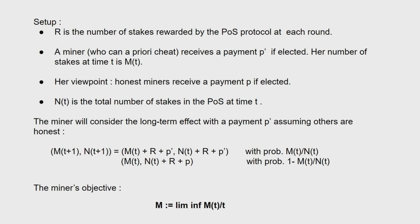The miner will consider the larger effect with the payment of P-prime, assuming all others are honest. We can simply write down the dynamics of MT and NT: on the first line, you have what happens if this miner is elected, and on the second line, that's the opposite. The miner's objective is to maximize the average payment in the long term — that's the expectation of MT over T, taking T to infinity.